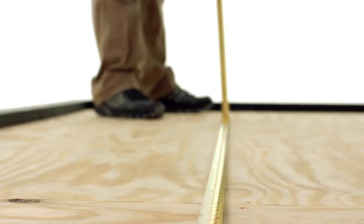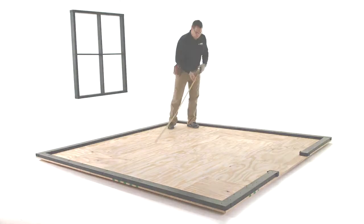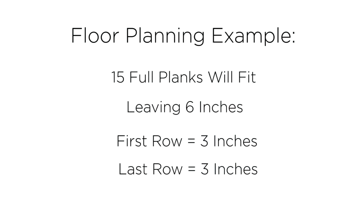Before you start your first row, measure the room. Divide by the width of the flooring planks you're installing. How many planks will it hold? Half of what remains will be the size of the first row and the other half will be the size of the last.